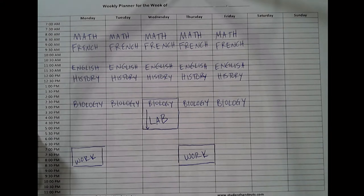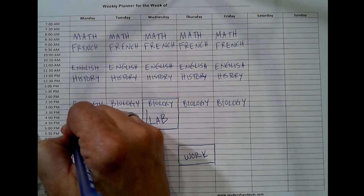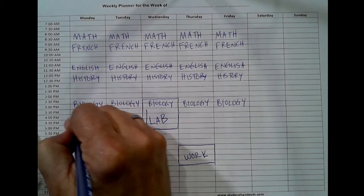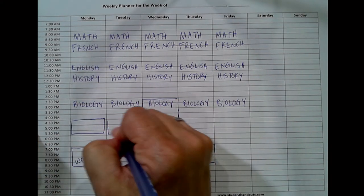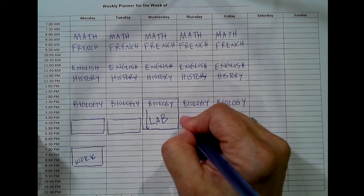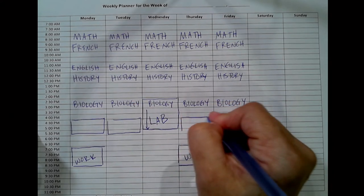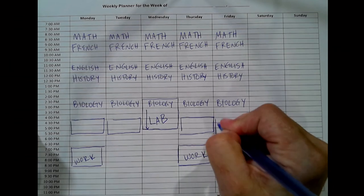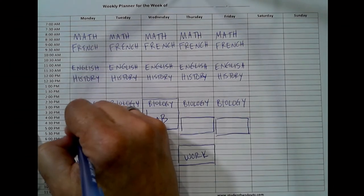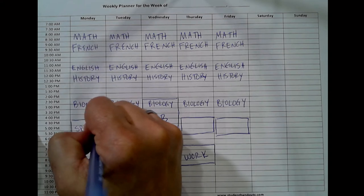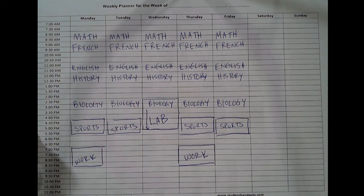You may also have a weekly commitment to participate in practices for a sports team — say, practice from 4:30 to 6 every day that you can be there. Of course you can't be there on the biology lab day, but the rest of the days that's where you're supposed to be. This is the calendar with all of your immovable commitments — all the things where attendance is being taken and it matters whether or not you show up.